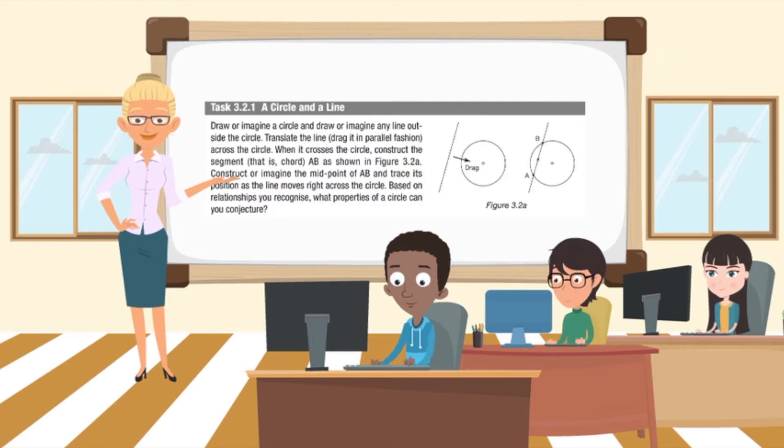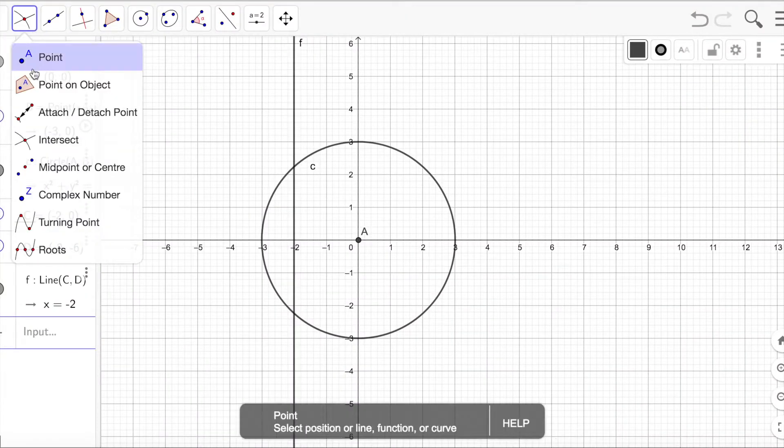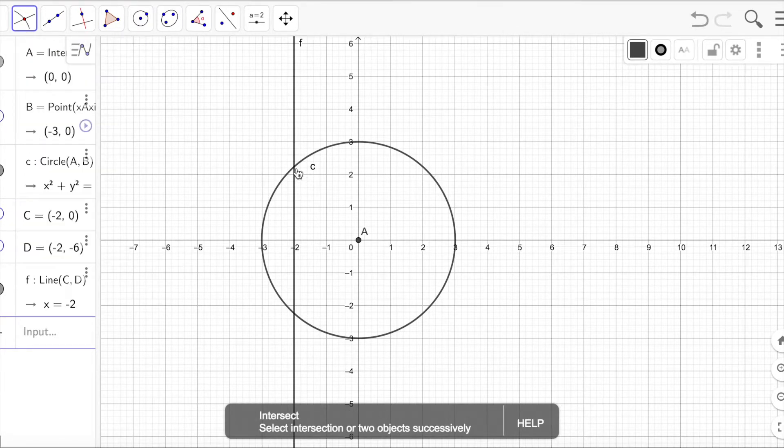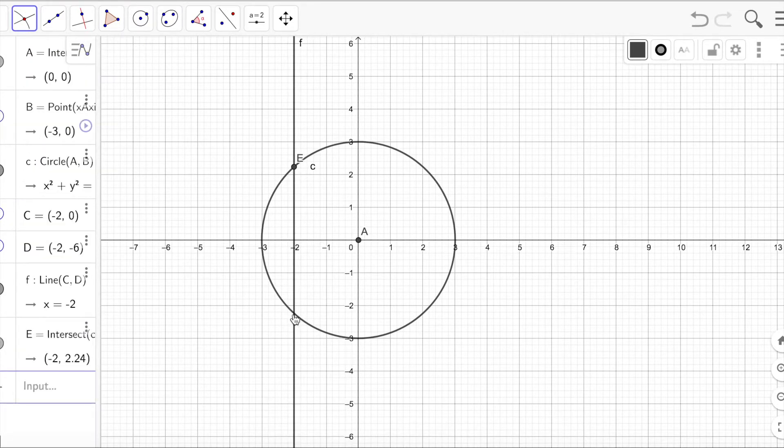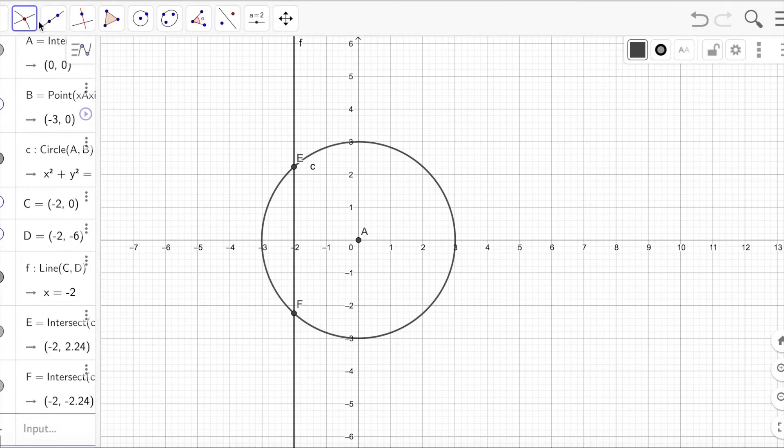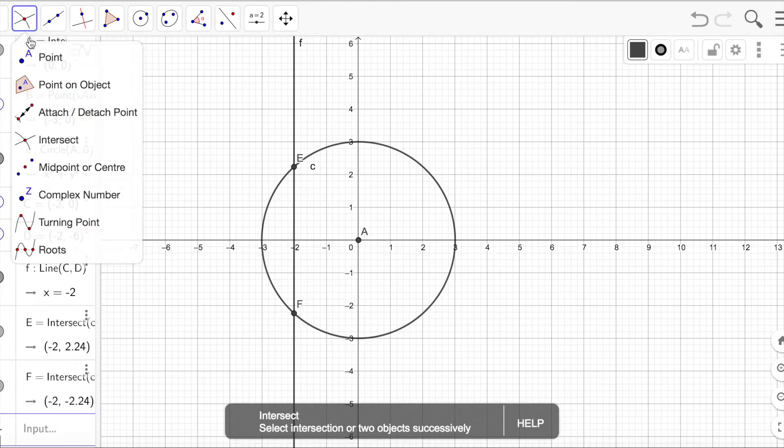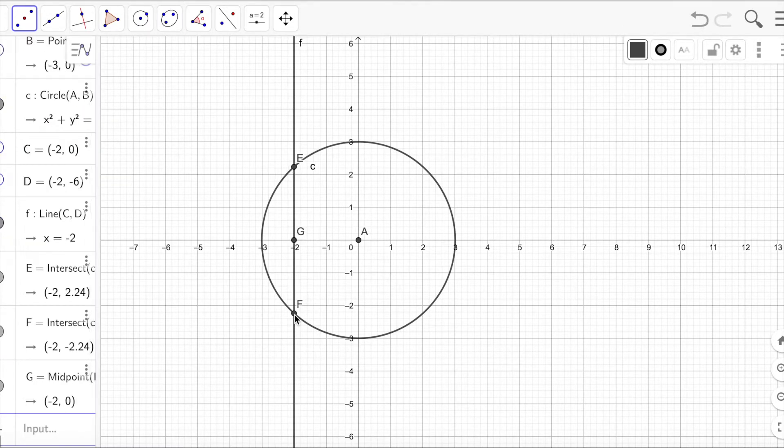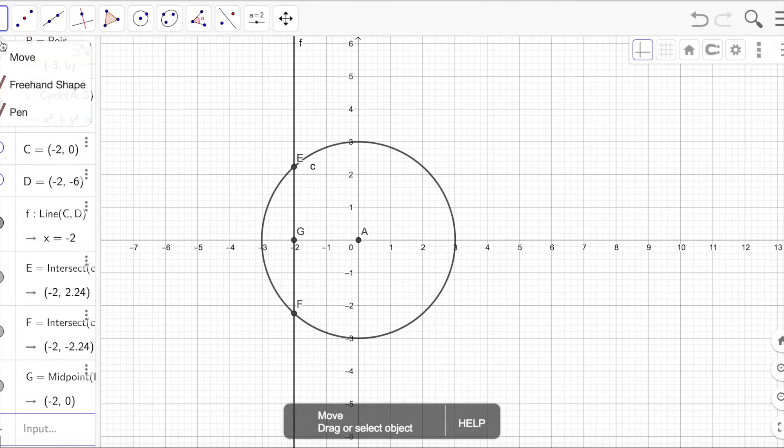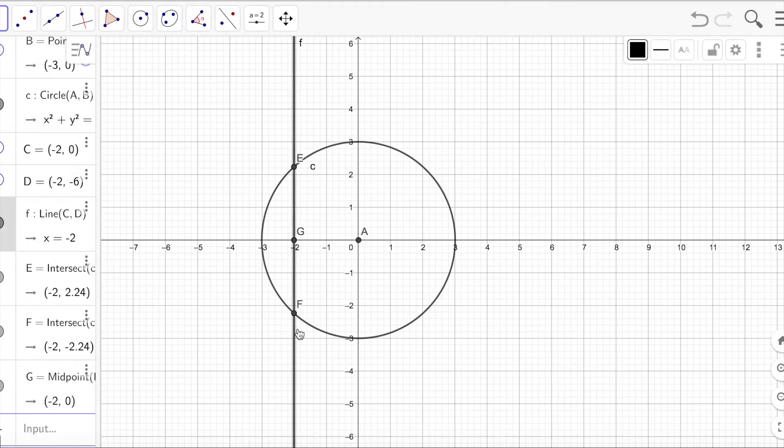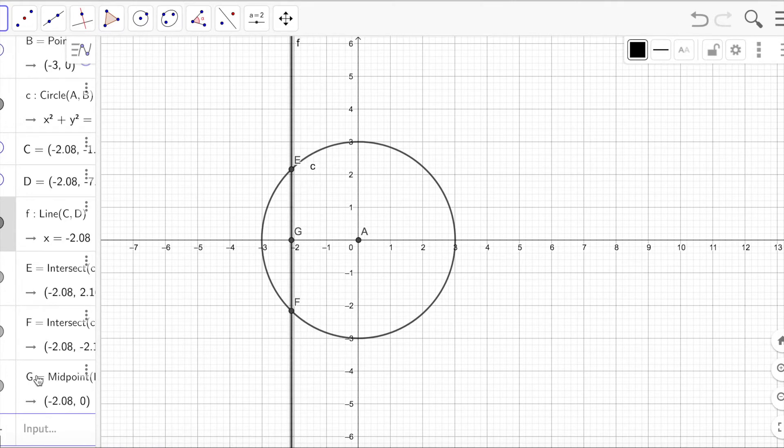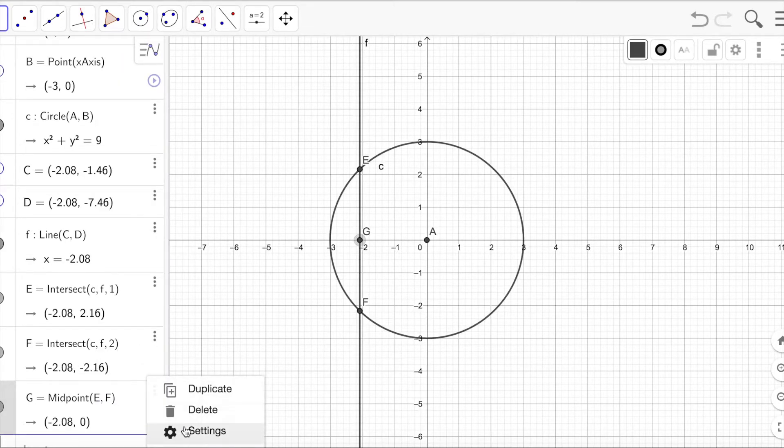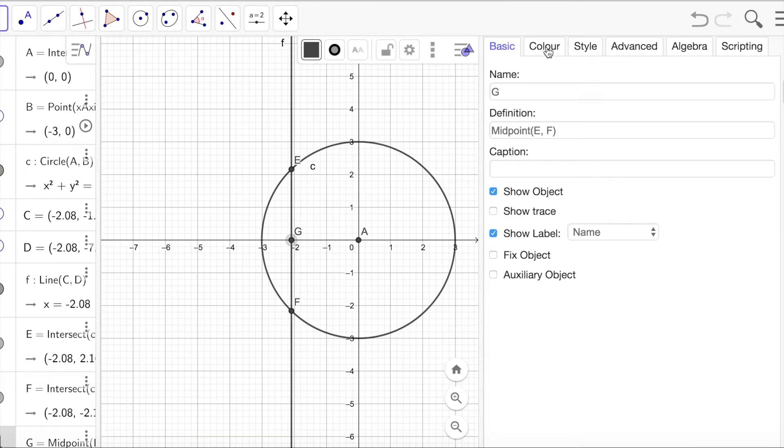The second activity in the lesson is taken from Developing Thinking in Geometry by Johnston Wilder and Mason. For the second task, the students are provided with a GeoGebra file that consists of a line and a circle. The task instructs students to first mark out the points of intersection of the line and the circle, constructing the line segment EF. Students are then instructed to construct the midpoint of the chord and trace its position as the line moves through the circle. Students can use the GeoGebra trace tool to mark out the path of the midpoint to get a better sense of what is happening and form a conjecture.